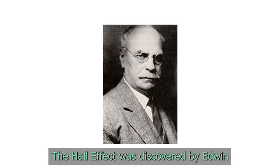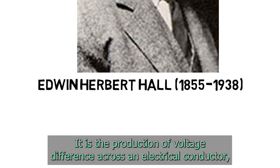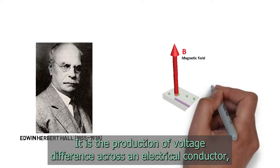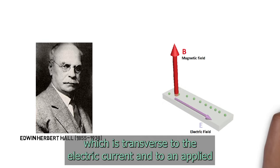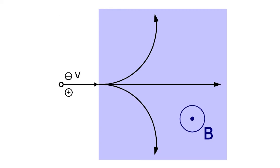The Hall effect was discovered by Edwin Hall in 1879. It is the production of voltage difference across an electrical conductor.